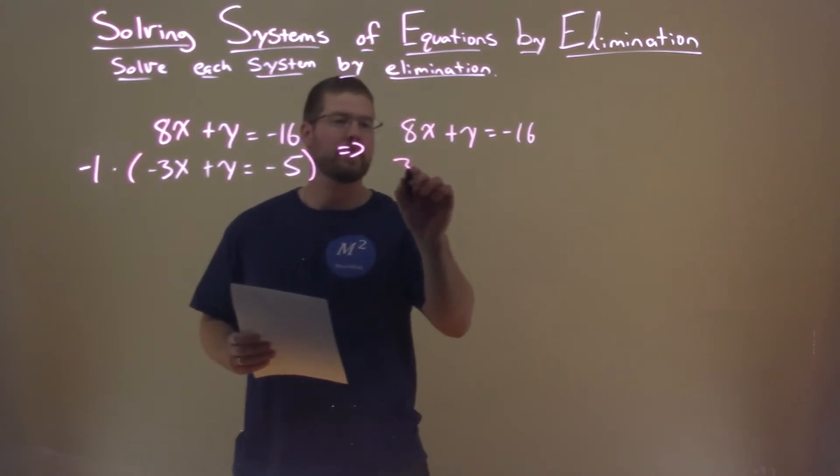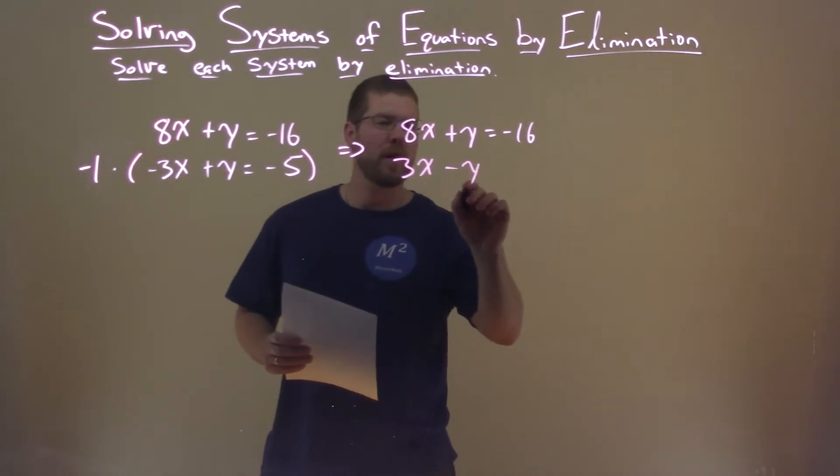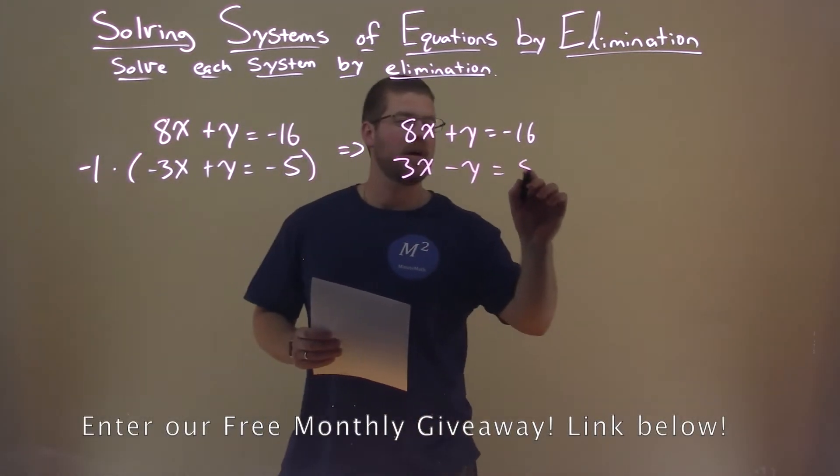Negative 1 times negative 3x, positive 3x. Negative 1 times y, a minus y. Negative 1 times a negative 5, positive 5.